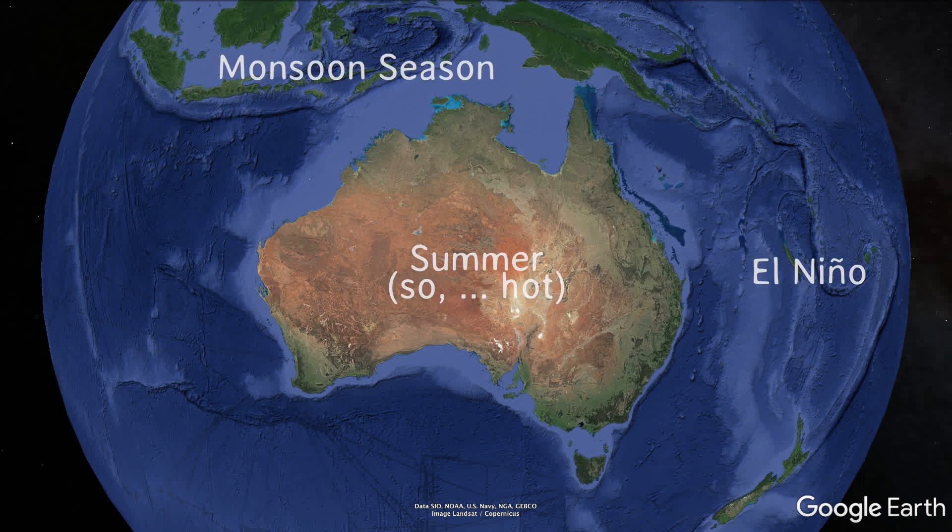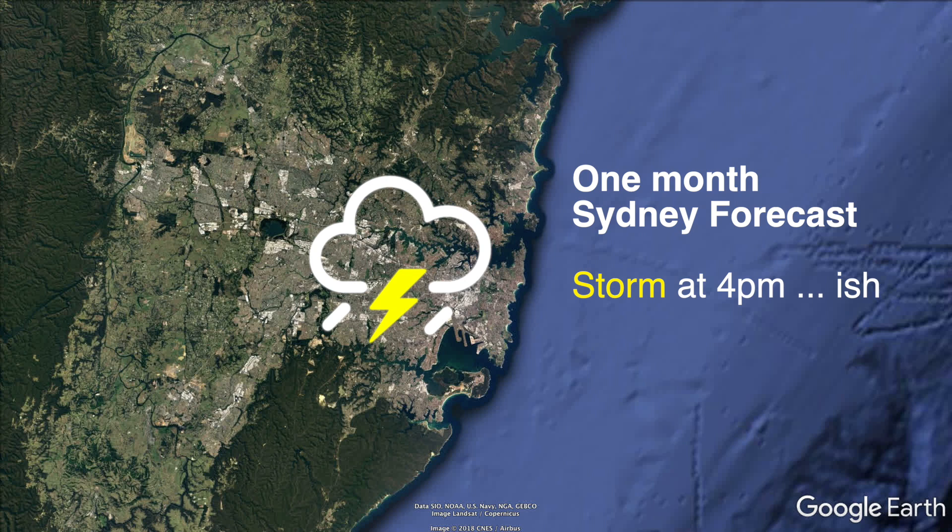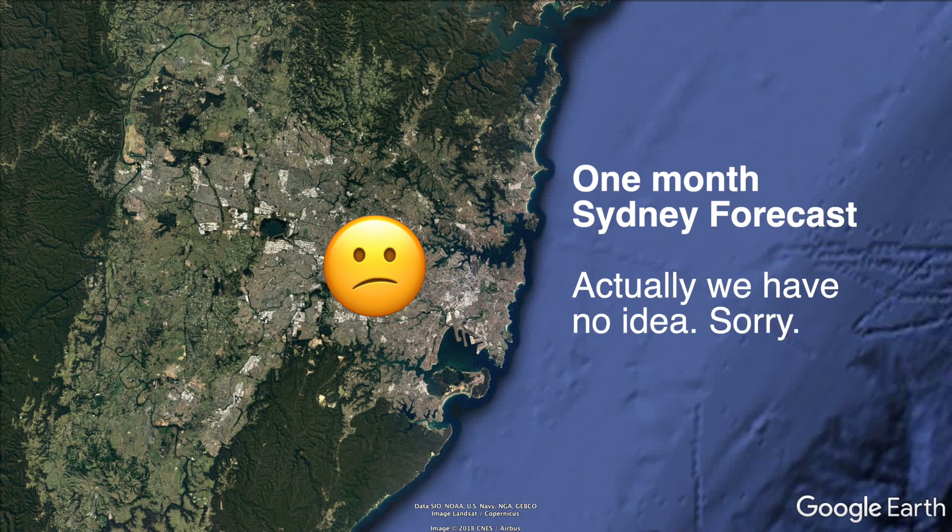Why is it so hard? Atmospheric science is pretty well known. Even if we can't predict next month's weather exactly, surely we can get pretty close. Well, it turns out long-range forecasting isn't possible, even in principle.